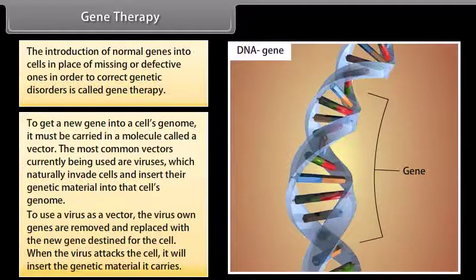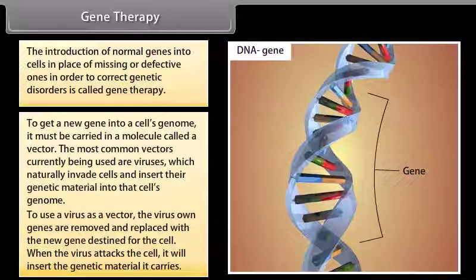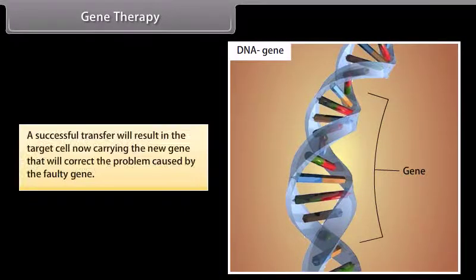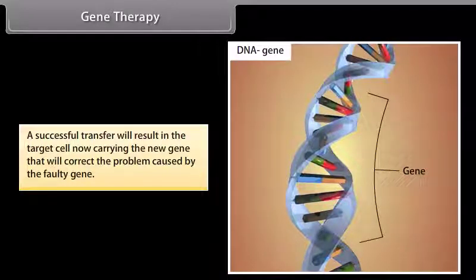To use a virus as a vector, the virus's own genes are removed and replaced with a new gene destined for the cell. When the virus attacks the cell, it will insert the genetic material it carries. A successful transfer will result in the target cell now carrying the new gene that will correct the problem caused by the faulty gene.